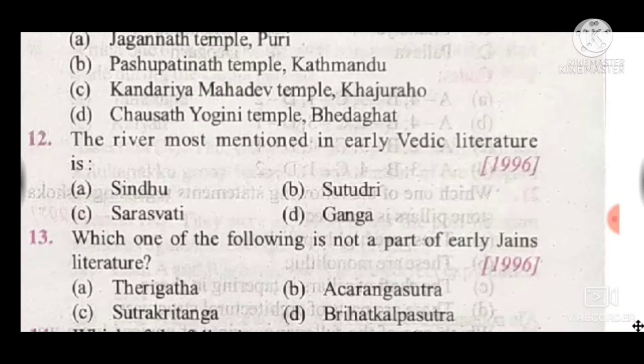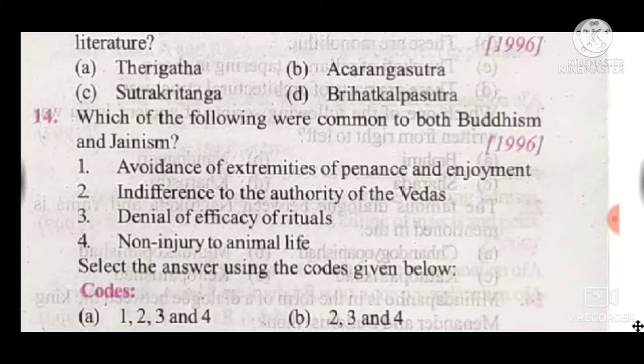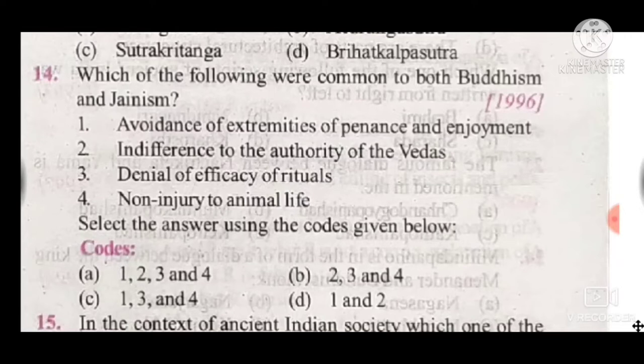Question 13: Which one of the following is not a part of early Jain literature? The answer is A, Trigupta. Question 14: Which of the following were common to both Buddhism and Jainism? The correct code is B, which refers to: disbelief in the authority of the Vedas, denial of the efficacy of rituals, and non-injury to animal life.